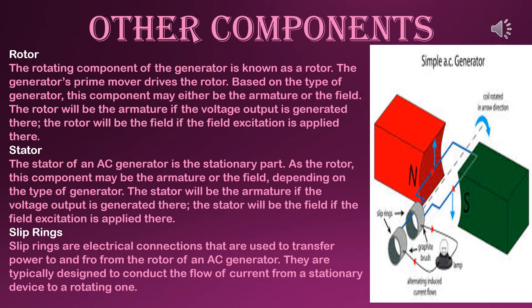Slip rings are electrical connections used to transfer power to and from the rotor of an AC generator in periodic motion. They are typically designed to conduct the flow of current from a stationary device to a rotating one. In the diagram you can see we are between two magnets — one north pole and one south pole — with two brushes, slip rings, commutator, armature, rotor, and stator. I have given you more points than your book, so please write these down to increase your marks.